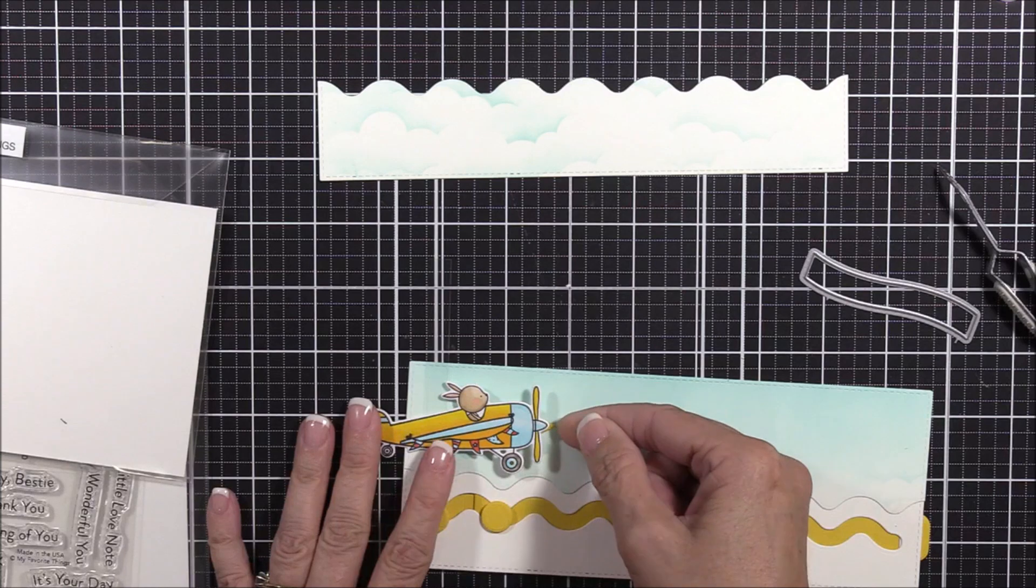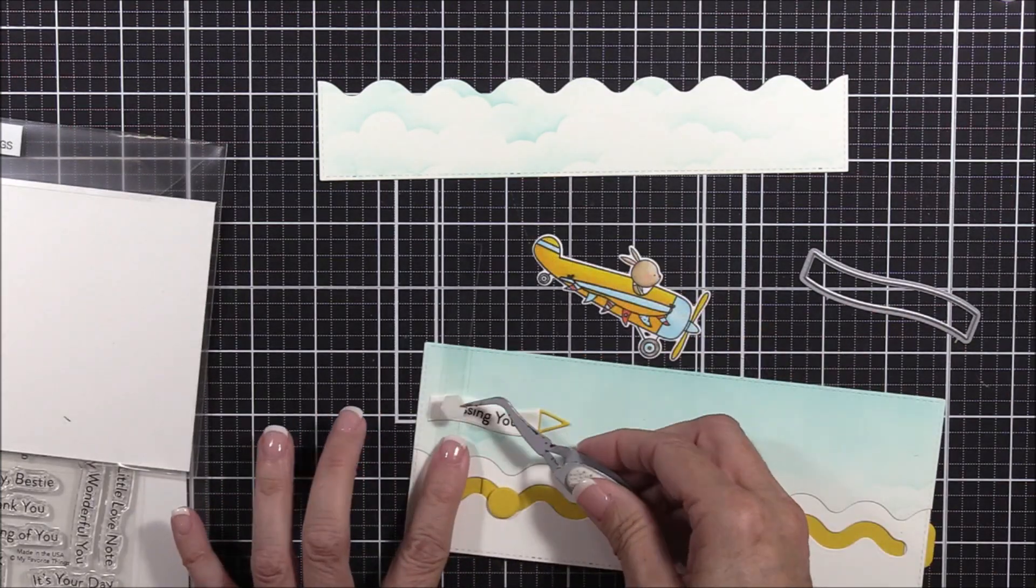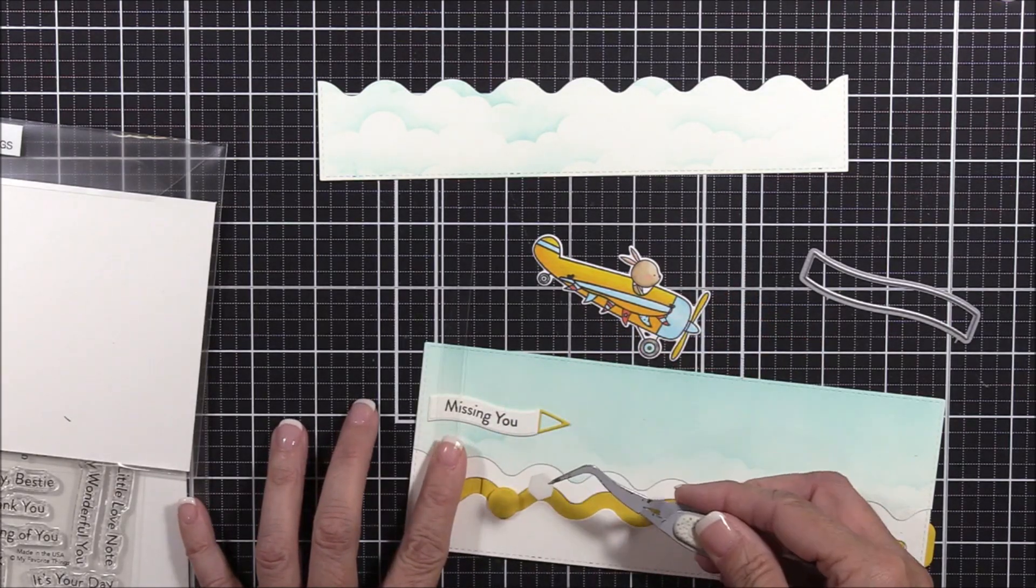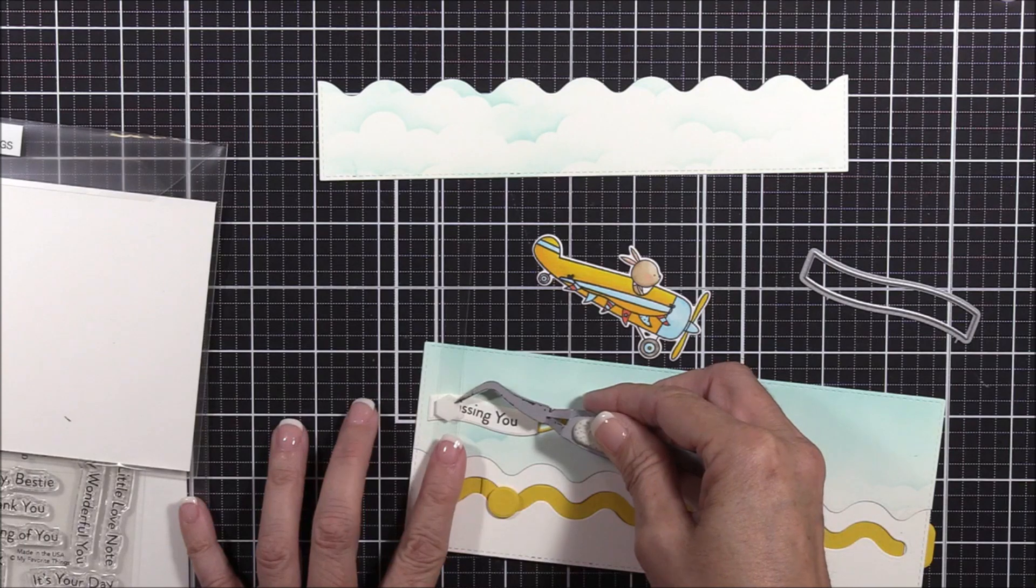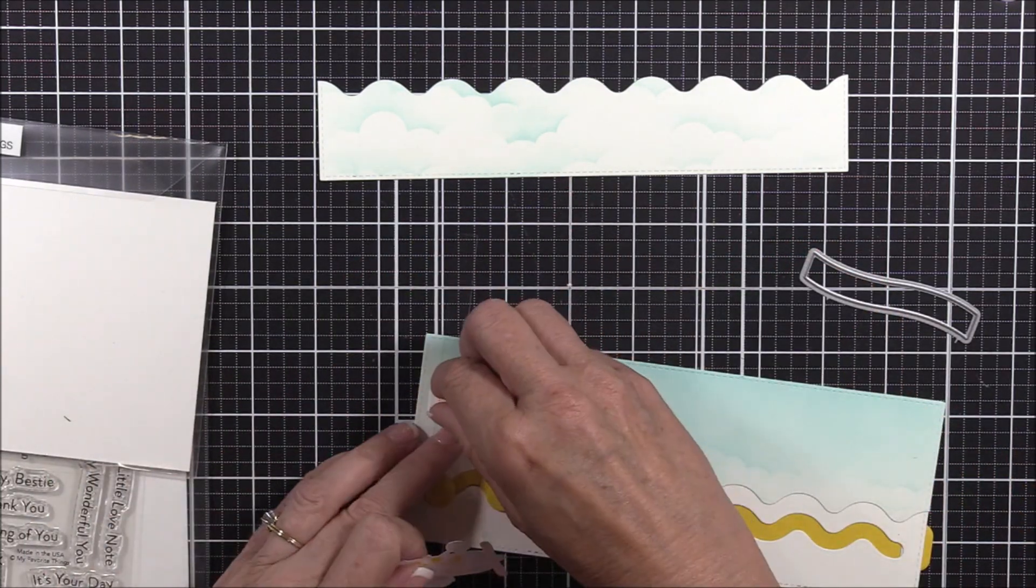Okay, I stamped, colored, and die cut that bunny flying airplane off camera so that I can focus on the interactive details of the card. I want to hide that banner behind the airplane so that it's revealed when I pull on the pull tab, so I'm trying to get an idea of where everything needs to go on the card.